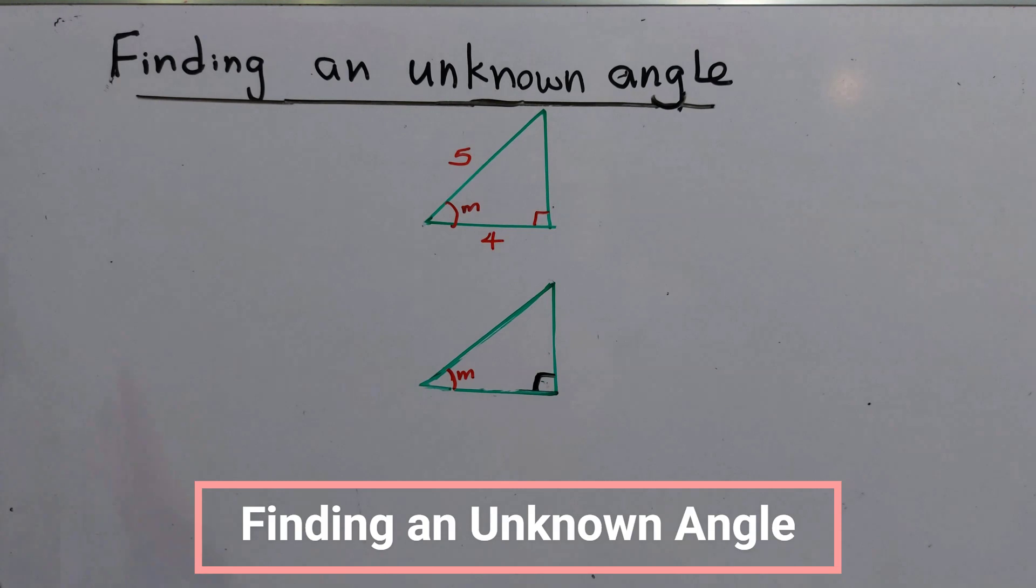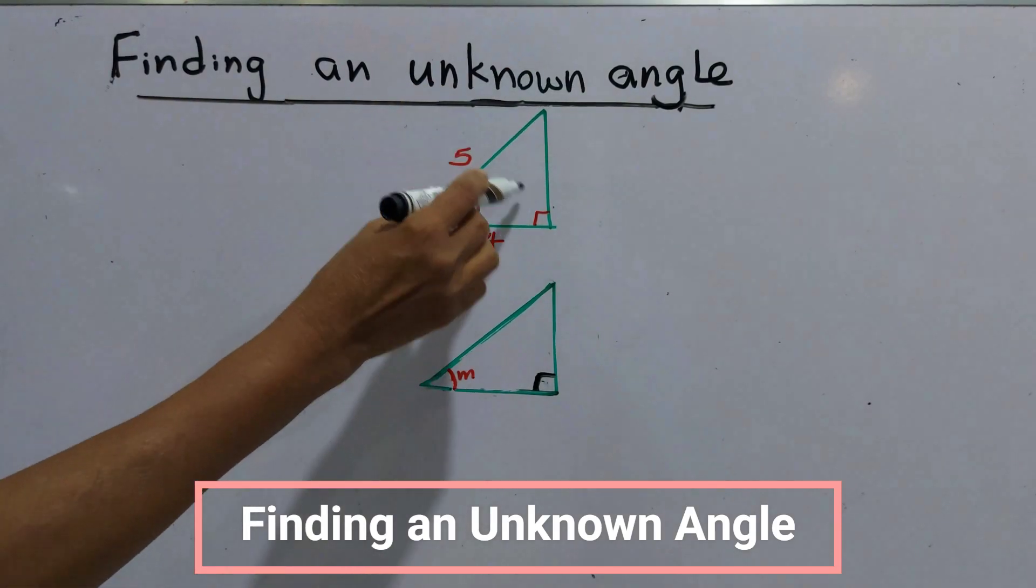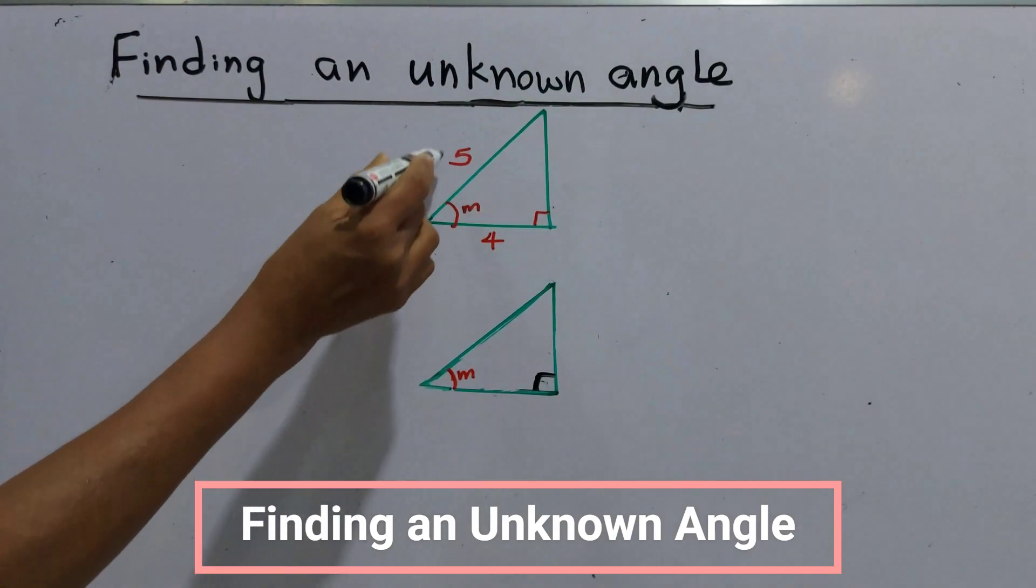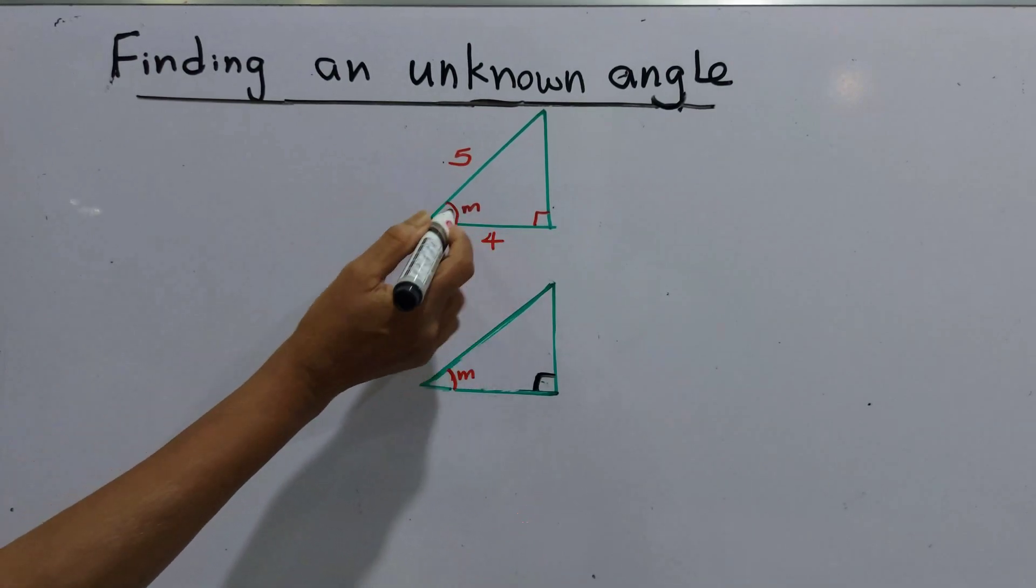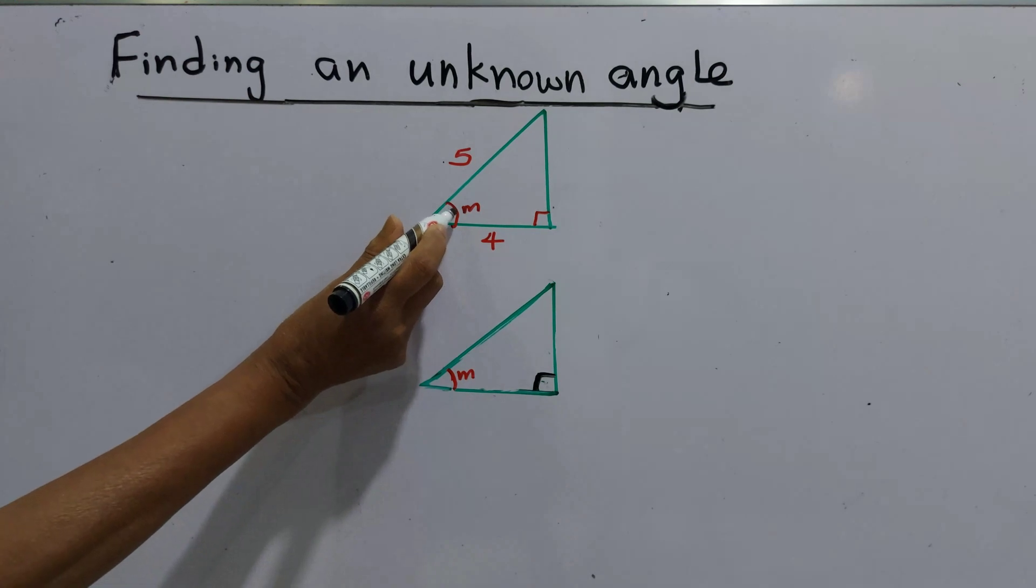Today we are going to find an unknown angle of a right triangle. These are the values given as five centimeters, four centimeters, and unknown angle is M.